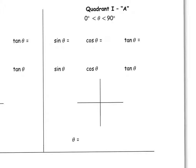Looking at quadrant 1 — the top right-hand corner. If the terminal arm is in the top right-hand corner, the XY point is out here. We make our terminal arm through some angle, drop it down, and make a right triangle. To get to this point, we go out X and up Y. The length from that point to the origin is R. Only X and Y can have a sign — R is always positive, it's a scalar. So sine is Y over R, cos is X over R, and tan is Y over X.